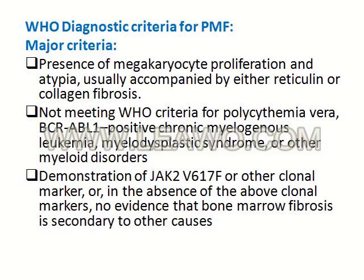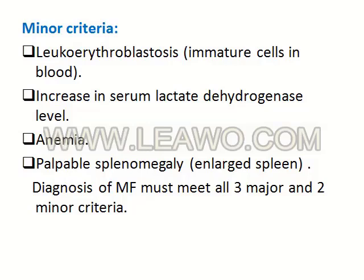These are the WHO diagnostic criteria for primary myelofibrosis: presence of megakaryocyte proliferation and atypia; not meeting WHO criteria for polycythemia vera, chronic myelogenous leukemia, myelodysplastic syndrome, or any other myeloid disorder; and demonstration of JAK2 mutation or other clonal markers. There must be no evidence that pulmonary fibrosis is secondary to another process. Minor criteria include leukoerythroblastosis, increased serum lactic dehydrogenase, anemia, and palpable splenomegaly. Diagnosis requires all three major and two minor criteria.